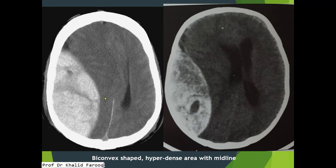Significant mass effect is appreciated on the right lateral ventricle. There is contralateral midline shift, and mass effect is also appreciated on the left lateral ventricle. There is subtle dilatation of the atrium and occipital horn of the left lateral ventricle. Mild scalp edema is noted over the right parietal bone.